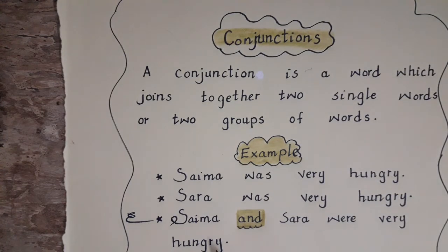So the word 'and' is used to join together the words Saima and Sara, and 'and' is called a conjunction.